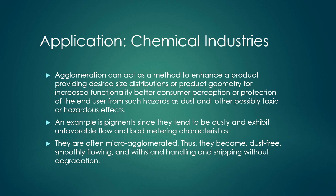Pigments are often micro-agglomerated, making them dust-free, smoothly flowing, and able to withstand handling and shipping without degradation. The agglomerates are in the micron size range — called micro-agglomeration — produced from nano-sized particles. This controlled micro-agglomeration yields dust-free, smoothly flowing material that can be shipped without degradation.